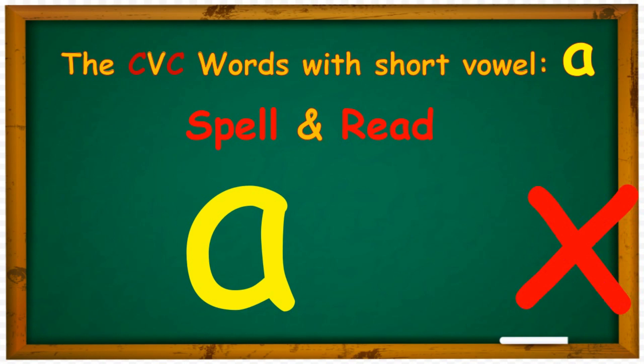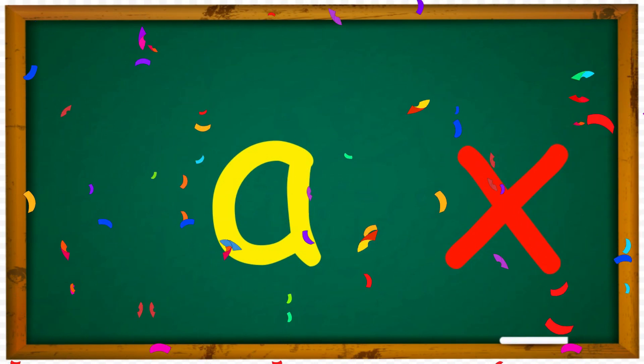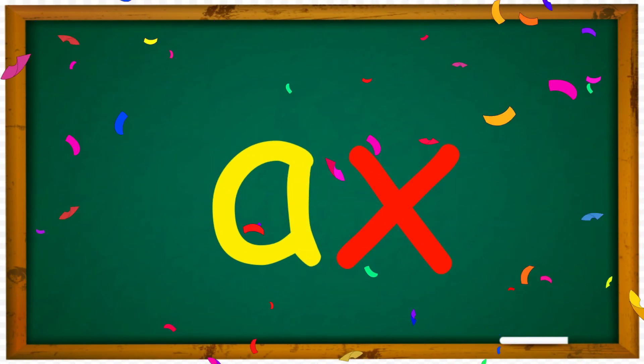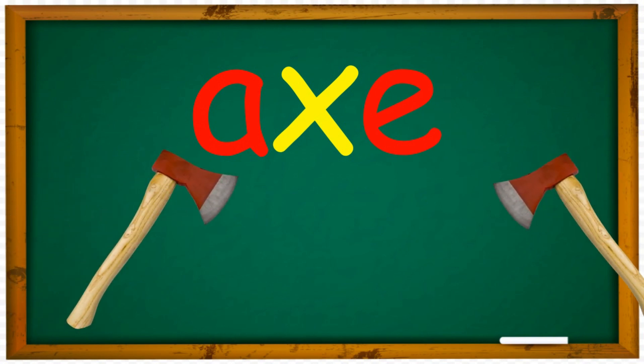A, X, AX. A and X come together to form the sound AX. A, X, E, AX. AX.